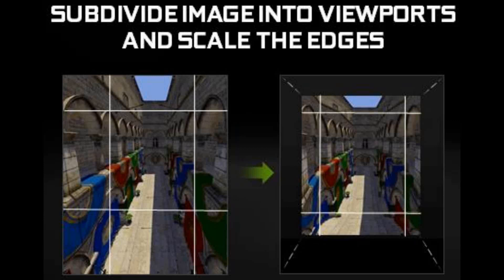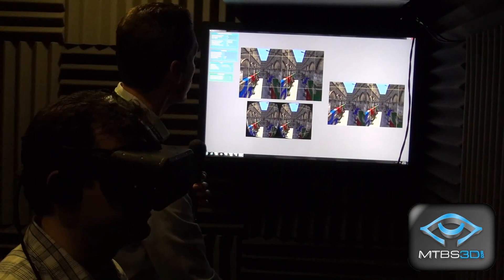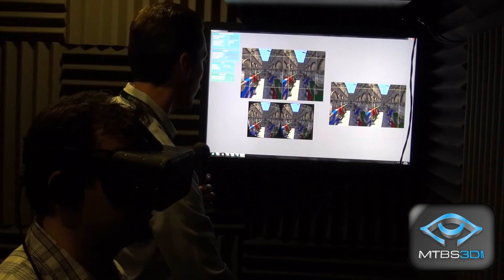This is your original image. Over here is what gets rendered with multi-resolution shading turned on. And down here you see the final warped image.